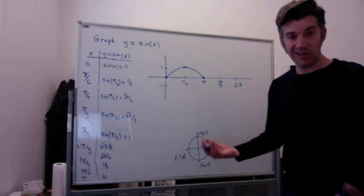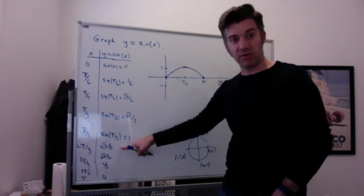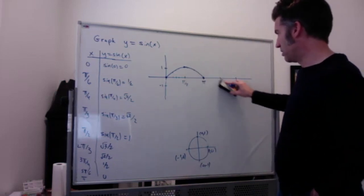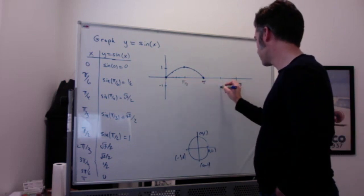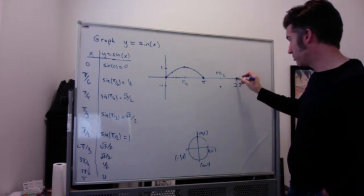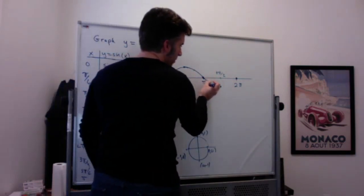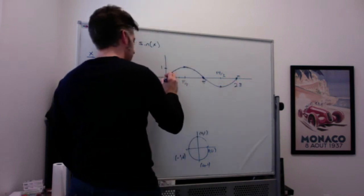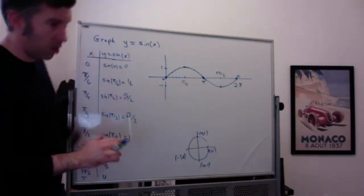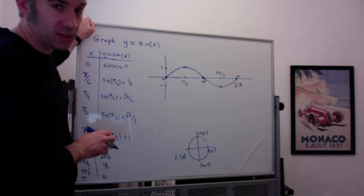In quadrant 3, sine is negative. The next values are negative one half, negative √2/2, and negative 1. I'll focus on the key point: at 3π/2, sine is negative 1. Then at 2π, sine returns to 0. So the shape of the graph is a smooth wave. The long way is to plot all these points; the short way is to plot just 5 points — always 5 points. Let's do cosine and see what it looks like.